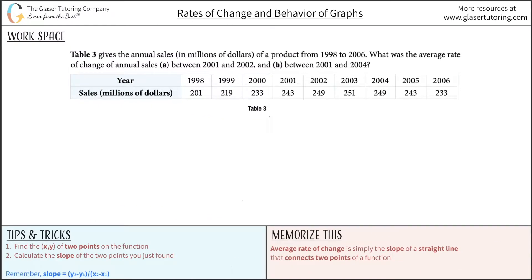Table 3 gives the annual sales in millions of dollars of a product from 1998 to 2006. What was the average rate of change of annual sales: letter A, between 2001 and 2002, and letter B, between 2001 and 2004?